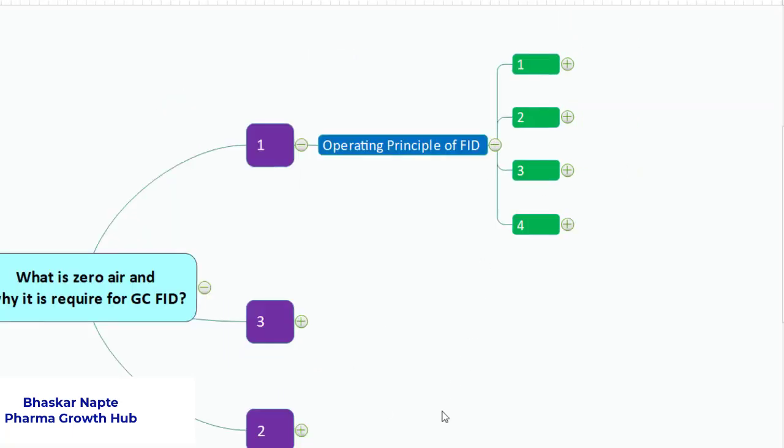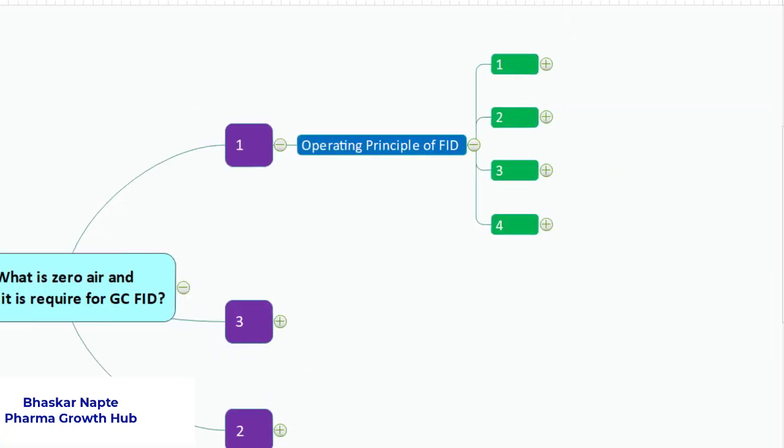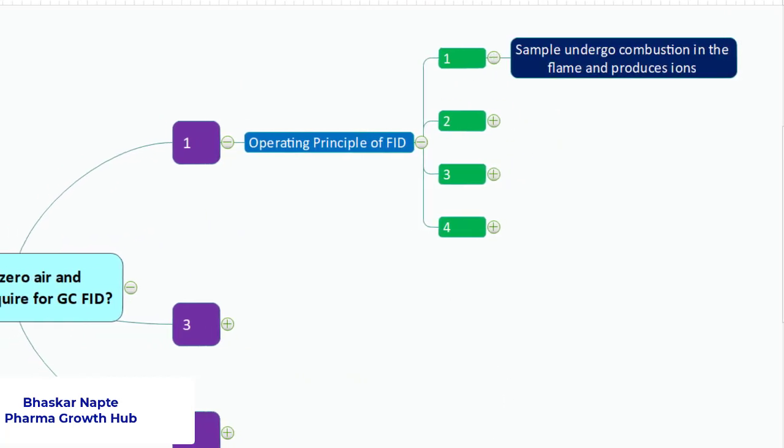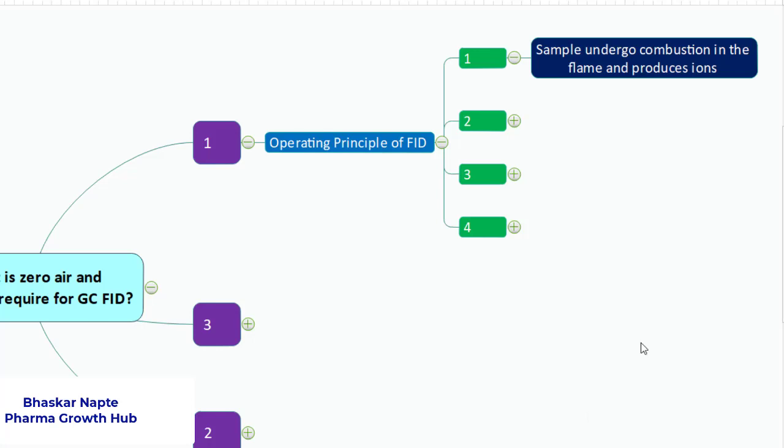These are four points which are very important. The first one is sample undergoes combustion in the flame and produces ions. So flame ionization detector - whatever sample elutes out of the column and enters into the detector, that is FID, it undergoes combustion due to the presence of the flame and the flame produces ions out of the sample.